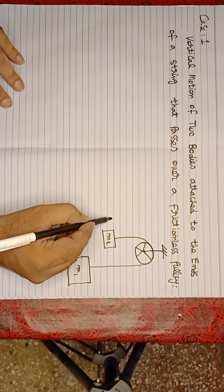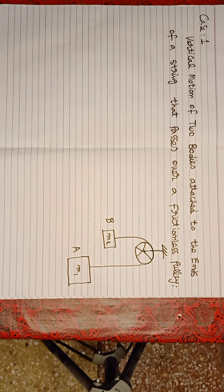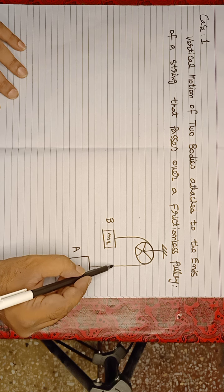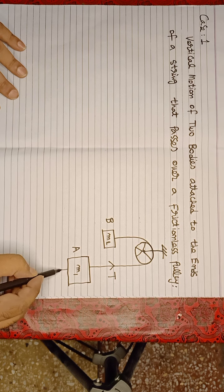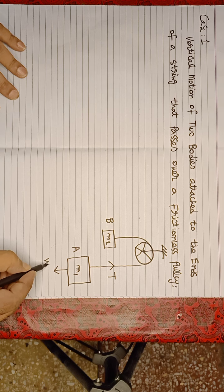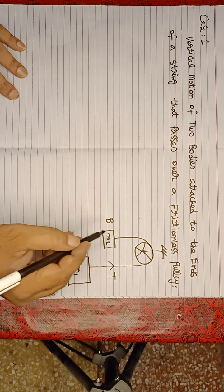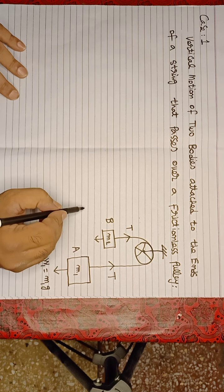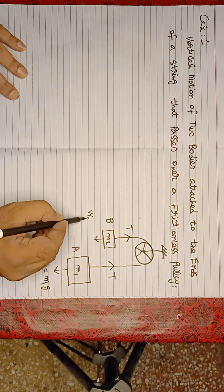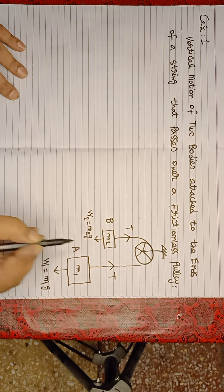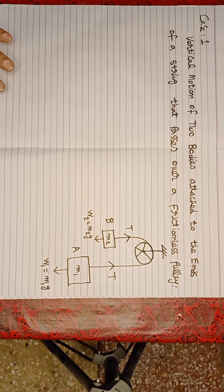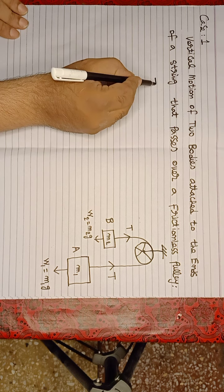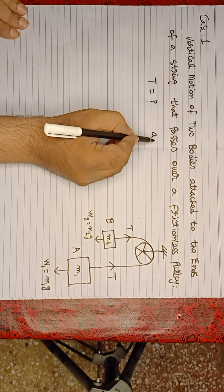We label the bodies. Tension acts in the upward direction and weight acts in the downward direction. The weight of M1 is equal to M1G, and tension acts upward with weight downward for M2 as well, with its weight equal to M2G. We have to find the tension in the string and also find the acceleration.